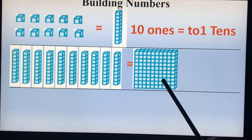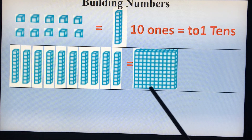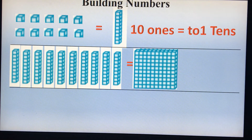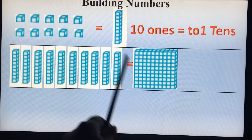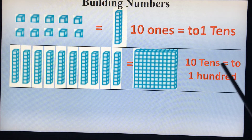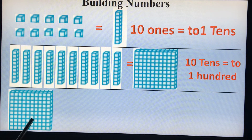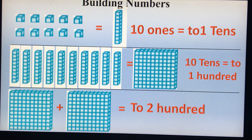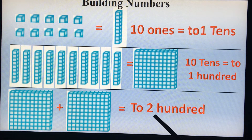Let us represent this flat box as one hundred. In this there are one hundred one-cubes and ten times ten blocks. So this flat box represents a hundred block. Ten tens is equal to one hundred. Now I have a one-hundred block here. Adding one more hundred block gives me two hundred. So one hundred plus one more hundred block equals two hundred.